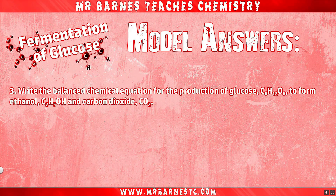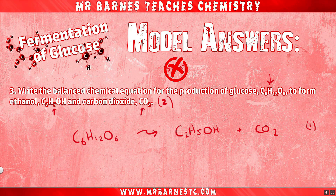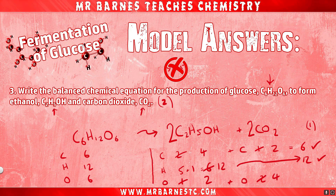Question three: the balanced equation, worth two marks. Marking point one — put the formula into your overall equation: C6H12O6 (glucose) → C2H5OH (ethanol) + CO2 (carbon dioxide). Remember, you don't include yeast, as it's chemically unchanged and doesn't take part in the reaction. Then you need to balance it: start by doubling the ethanol. You can then see you're missing one carbon and two oxygens, so double the CO2 — that balances it for your second mark.